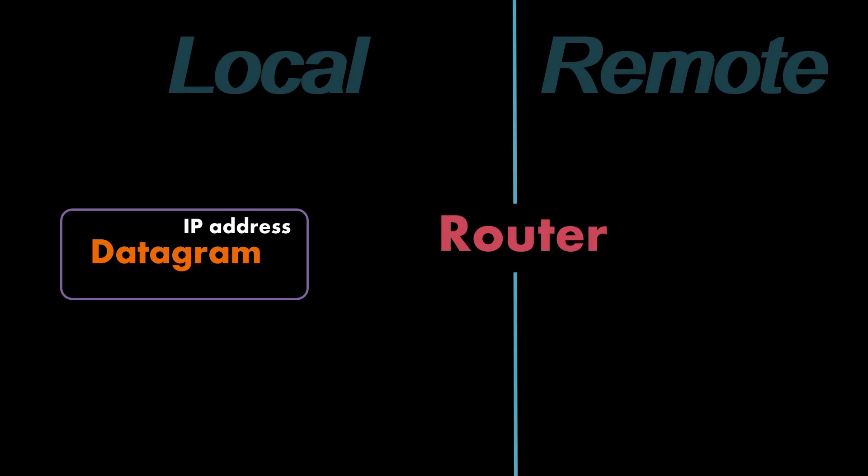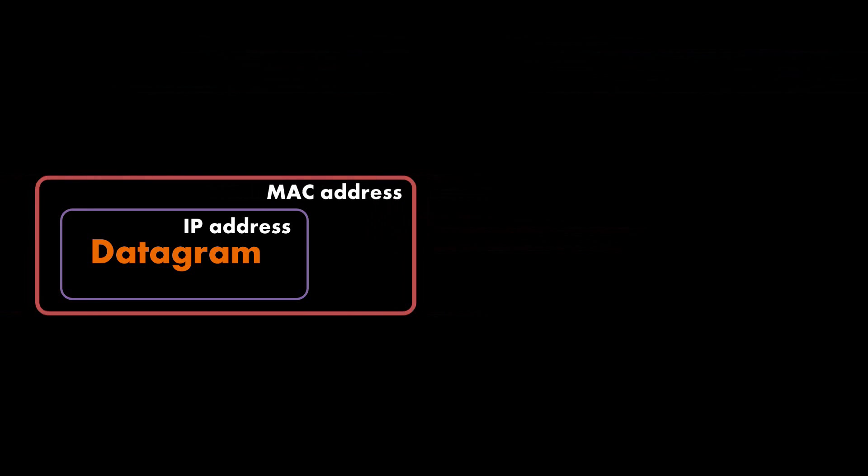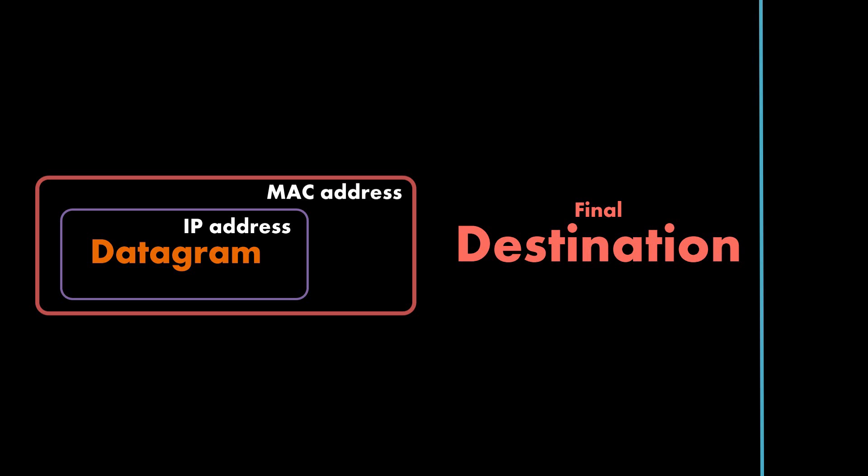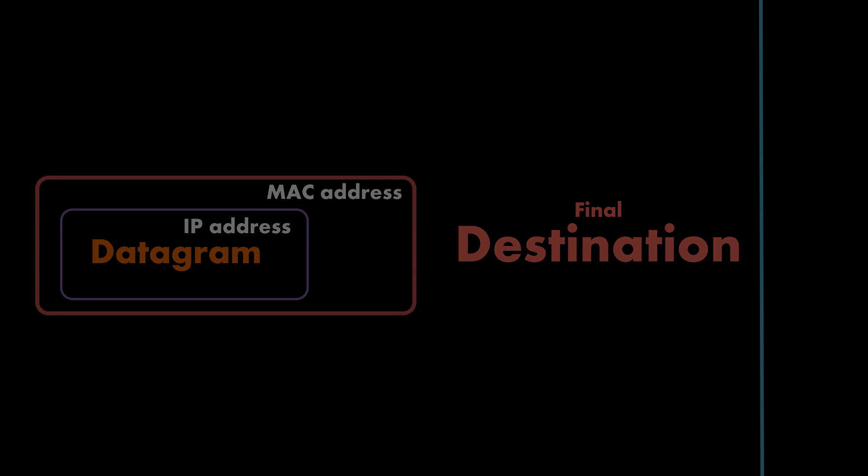Let's recap on what is a packet. A packet contains a piece of data which is intended for a device that may be local or remote to the network. The packet, which has to be placed into a frame to be transmitted on a local network, is labeled with a destination IP address that indicates the destination for the packet and ultimately its datagram.